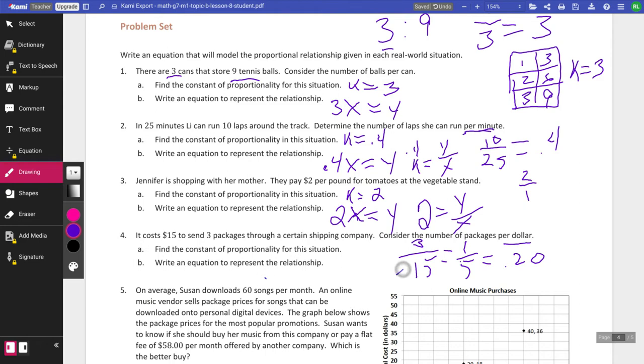Write an equation to represent the relationship. And again, guys, if you're doing this the way I did this was I took 3 fifteenths and I divided them each by 3 to get to 1 fifth. And I know that 1 fifth is 0.20. So here we have 0.20x equals y or 0.20 equals y divided by x.